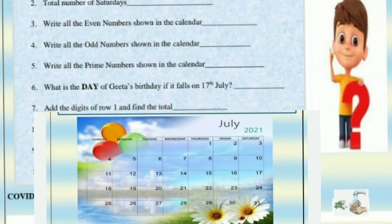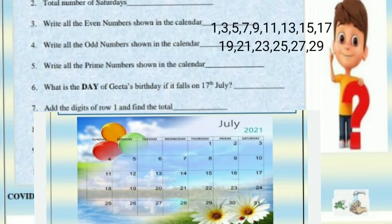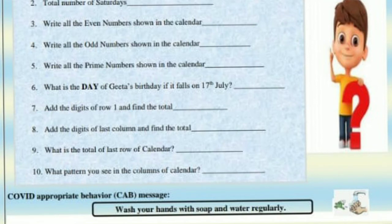Fourth: write all the odd numbers shown in the calendar. The odd numbers are: 1, 3, 5, 7, 9, 11, 13, 15, 17, 19, 21, 23, 25, 27, and 29.